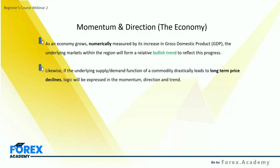Likewise, if we think of a commodity, the underlying supply and demand function can drastically lead to long-term price declines — this logic is expressed in momentum, direction, and trend. When we trade logically, we look to momentum to see where the market wants to go, where the force of the market is expressed in the battle between buyers and sellers pushing price in one particular direction across different asset classes.